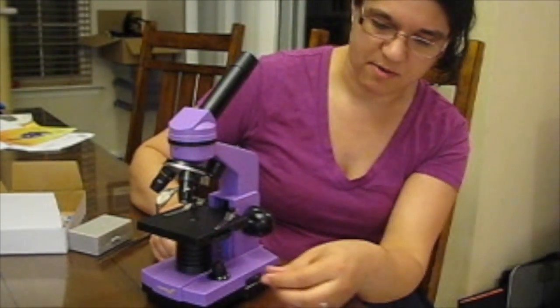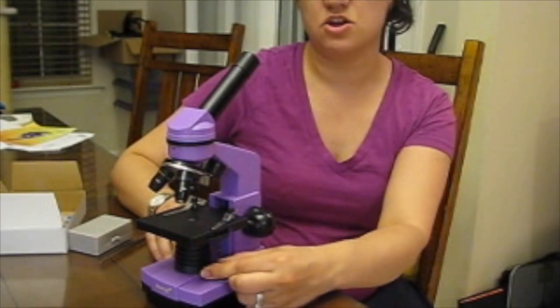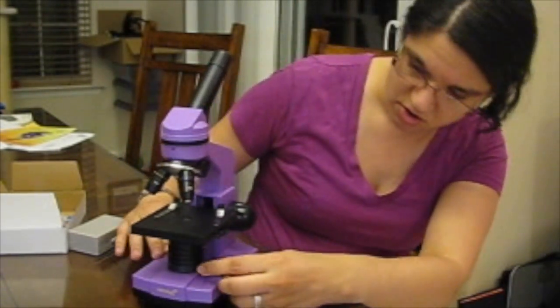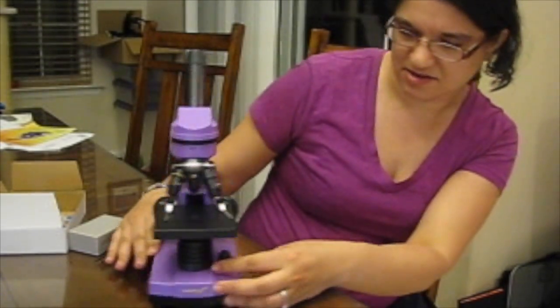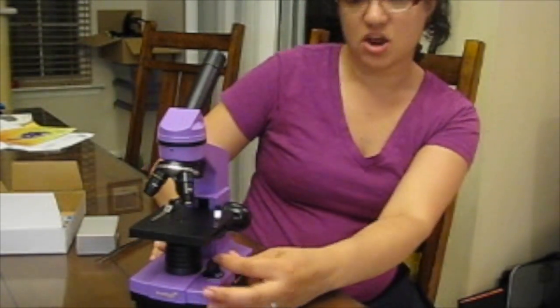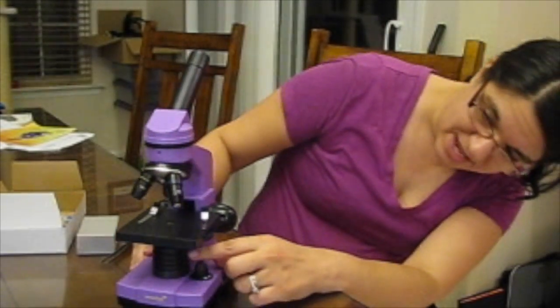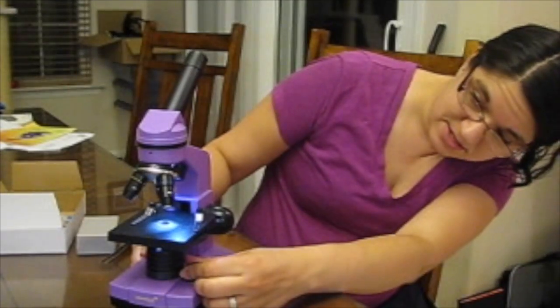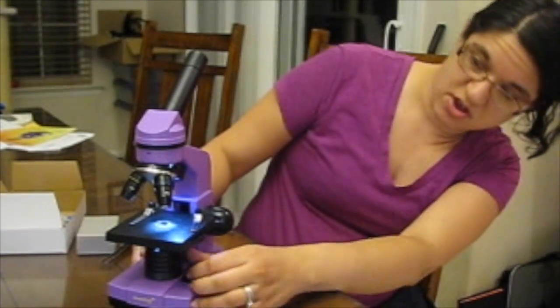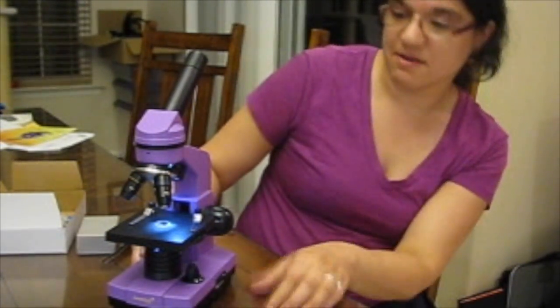So there's a knob right here. I just click it over once. Click it once and the bottom light turns on. Twice and the top light turns on. And three times and we now have both the bottom and top light.